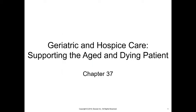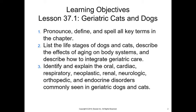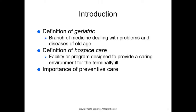Today we're talking about geriatric and hospice care, supporting the aged and dying patient. Geriatric medicine is a branch dealing with problems and diseases of old age. Hospice care is a facility or program designed to provide a caring environment for the terminally ill. We can make geriatric issues much better by using preventive care.